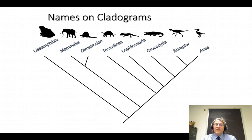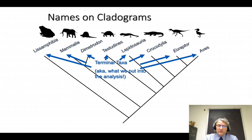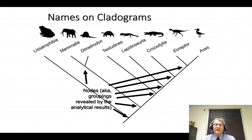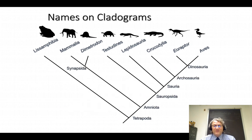To understand that, let's think about the names on the cladogram. We've seen taxon names at the tips before — the terminal taxa are the taxa we put into the analysis to begin with. But there are also the nodes, the connections between branches, and those are also nameable. They're groups revealed through the analytical results and they often have names as well.